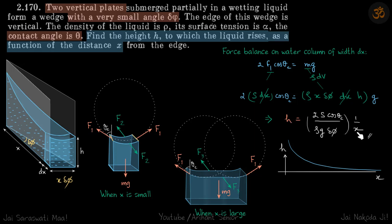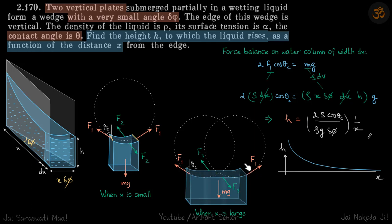If you plot h versus x, this is how the curve looks — a hyperbolic decay. This is just a symbolic image because when x becomes large this is no longer a capillary, but the equation still holds because the contact angle remains theta c at both surfaces, so the upward force is still 2f1·cos(θc).